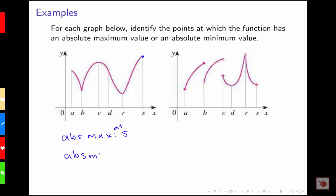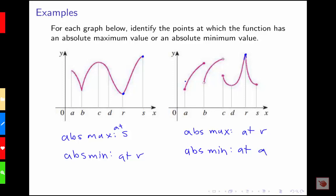It looks like the absolute minimum value is occurring at r. If I look at the second graph, it looks like my absolute maximum value is occurring at r. Let's say that there's just a sharp corner there. So at r I've got an absolute maximum value, and I've got an absolute minimum value at a. Over there, that's smaller than all of the other y values of my function.